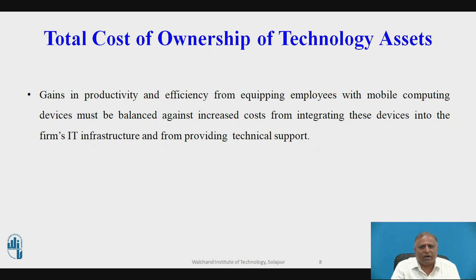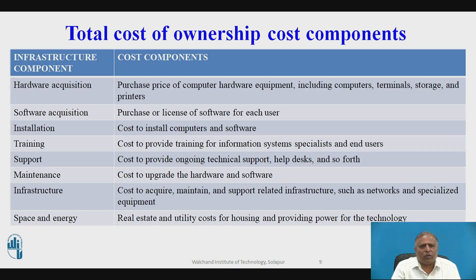Many large firms have redundant, incompatible hardware and software because their departments and divisions have been allowed to make their own technology purchases. These are the total cost of ownership cost components. The left-hand side shows infrastructure components, and the right-hand side shows cost components.